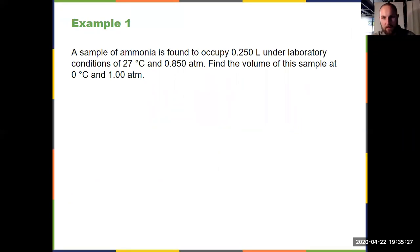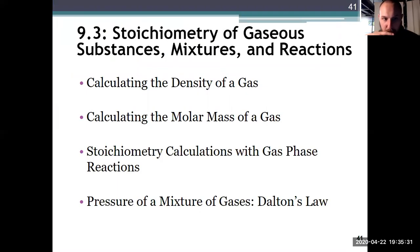But now let's think about stoichiometry and tie Chapter 9 back into Chapter 4. Stoichiometry of gaseous substances, mixtures, and reactions in Section 9.3. This is going to allow us to calculate density of a gas, molar mass of an ideal gas, do stoichiometry calculations, and then talk about mixtures. And we'll get one more law out of Chapter 9, Dalton's Law.